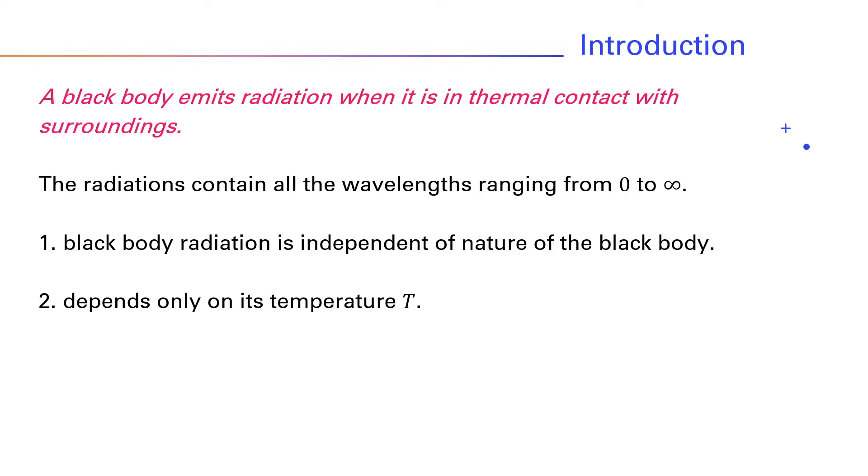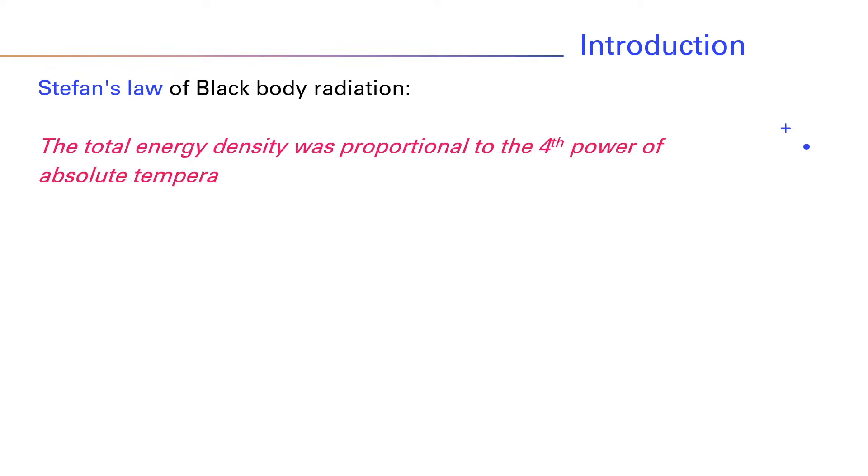Using the idea of pressure exerted by radiations on the walls of the black body, Stefan and Boltzmann showed that the total energy density was proportional to the fourth power of absolute temperature of the black body.